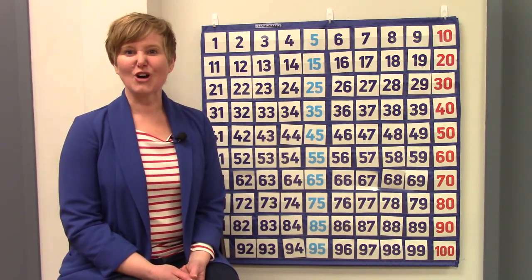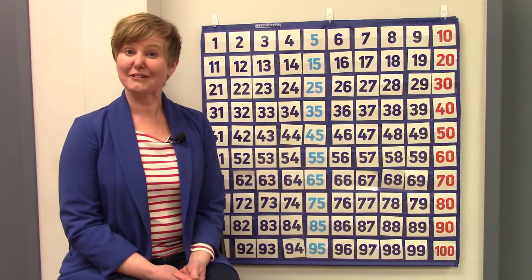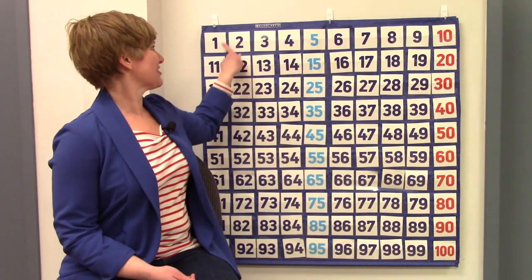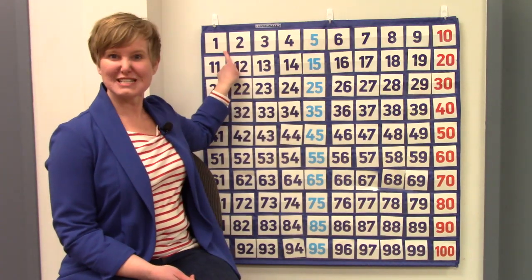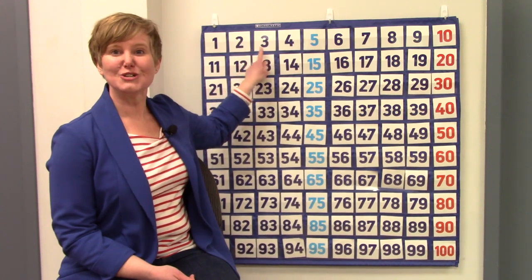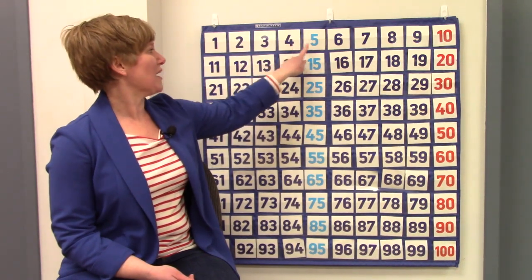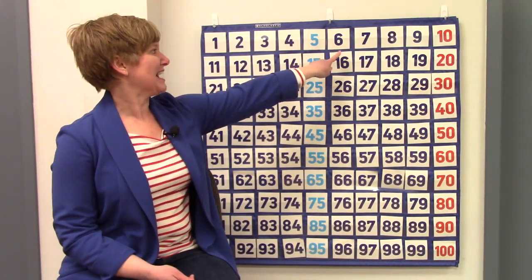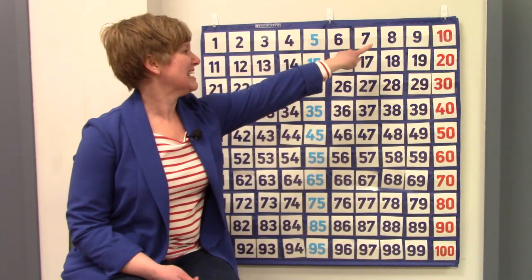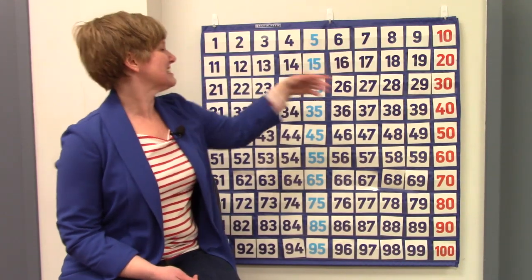Let's count all the way to twenty by counting by ones. We're going to start here. Let's do it together. One, two, three, four, five, six, seven, eight, nine, ten.